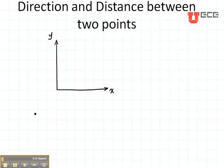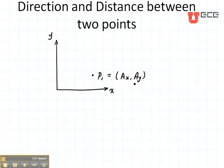Let's just draw two points. I'm going to call this P1 right here, and P1 is going to be defined as AX in the X direction and AY in the Y direction — that's going to be AX1 and AY1. Up here is going to be P2, which is going to be AX2 and AY2.